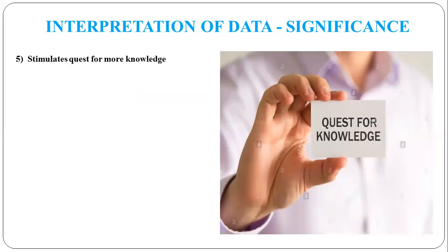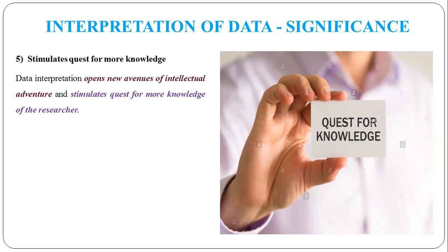The fifth significance is stimulating the quest for more knowledge. 'Quest' means search. Through data interpretation, researchers are stimulated to search for more and more knowledge because they discover new avenues and new information, which helps increase their knowledge. For example, a businessman researching a particular area to find out the social economic status of customers there collects data, interprets it, and gains additional knowledge about that area's customers. This is how interpretation of data motivates researchers to search for more knowledge and helps enhance their understanding.